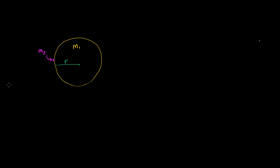The universal law of gravitation tells us that the force between these two masses is going to be equal to the gravitational constant times the product of the masses, so m1 times m2, all of that over the square of the distance, r squared.